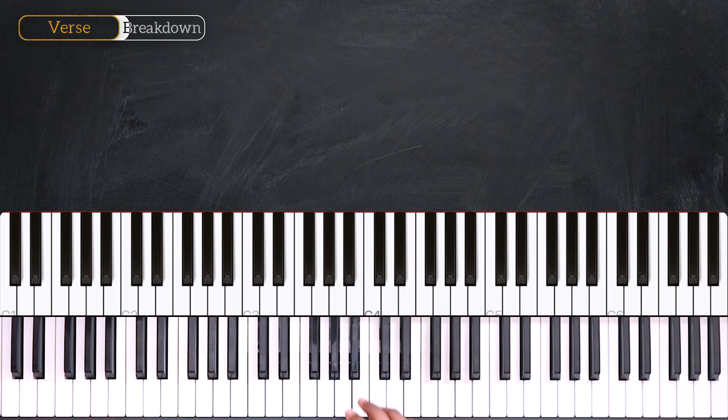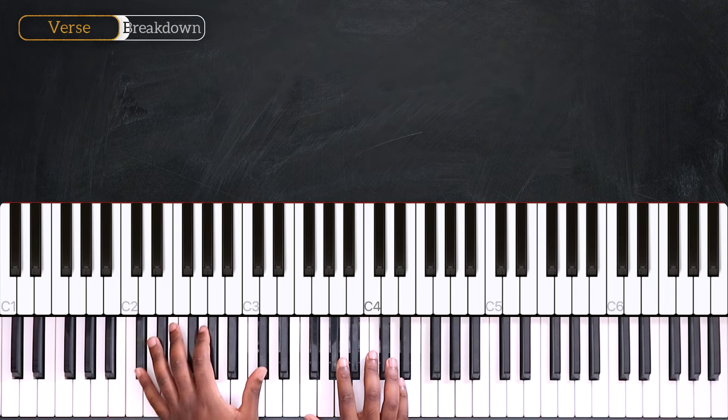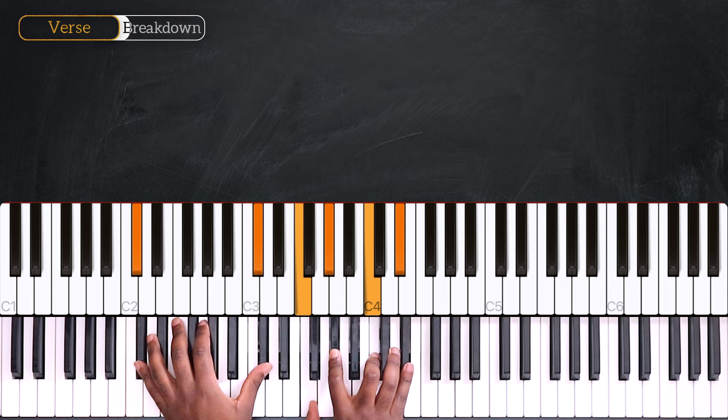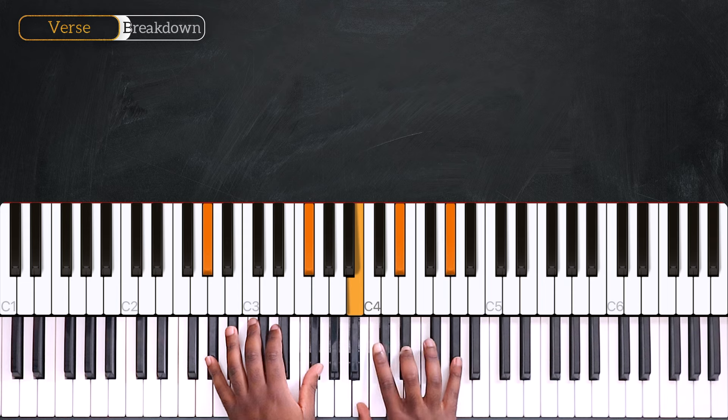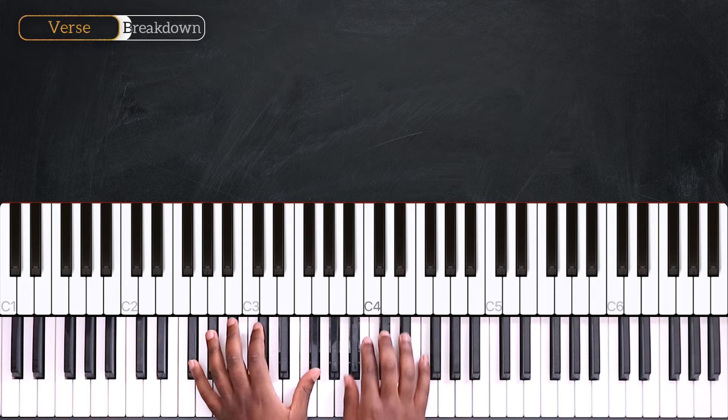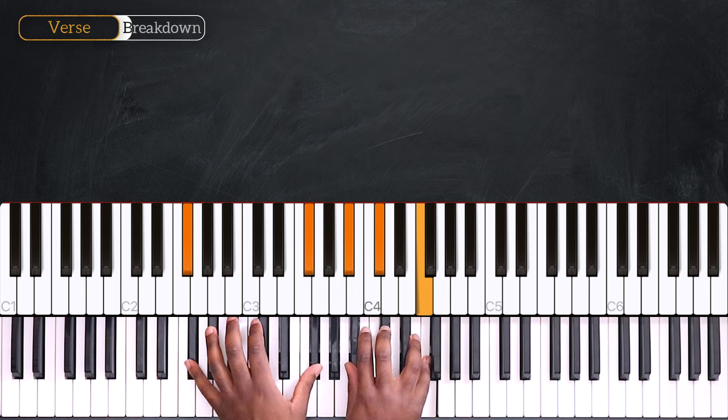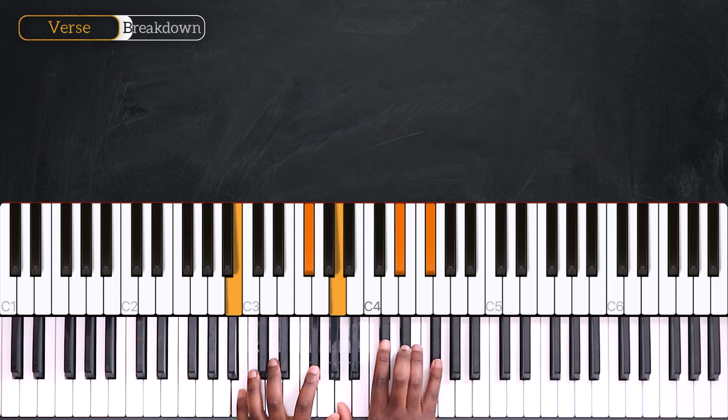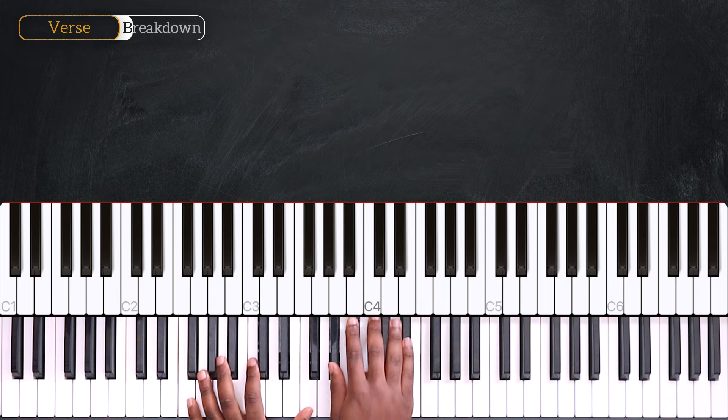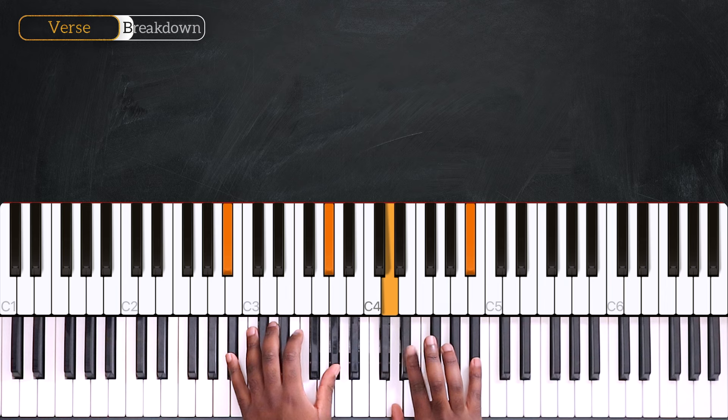Okay, perfect. Let's quickly recap. We have Db major 9. Then Ab minor 7. After that, Gb major 7. Bb minor 7. Eb minor 9.